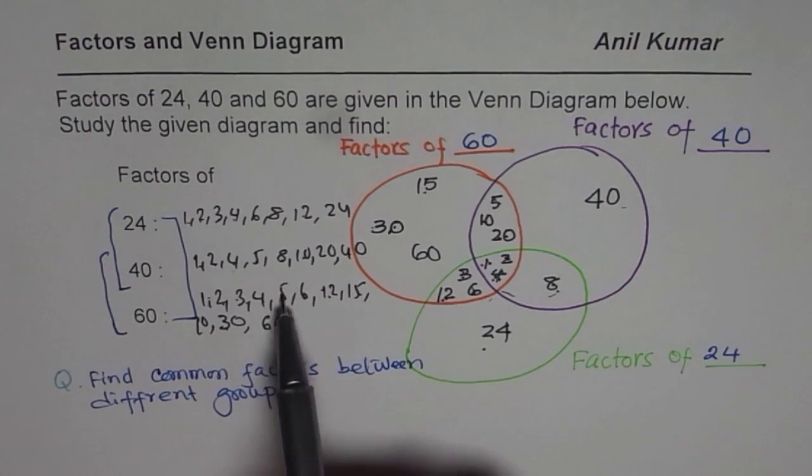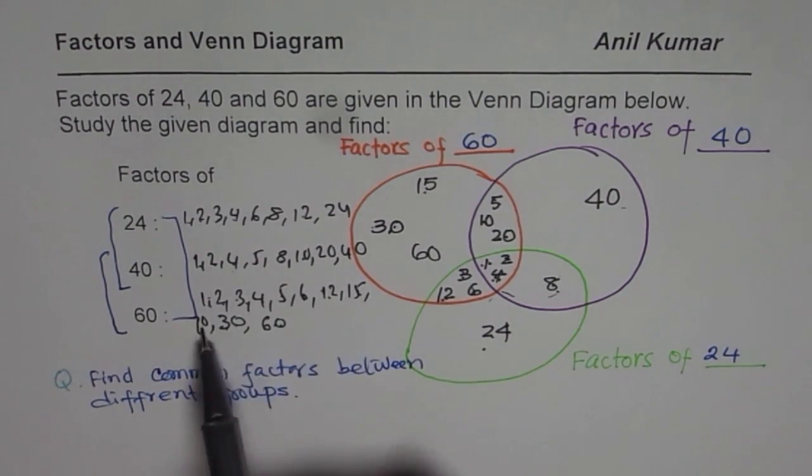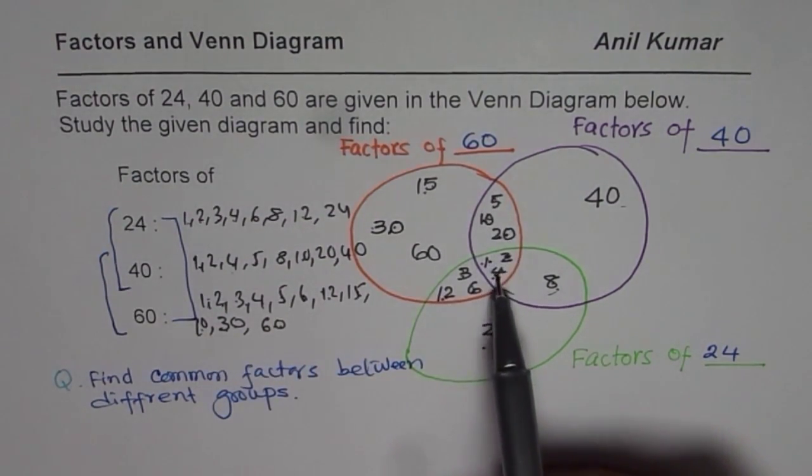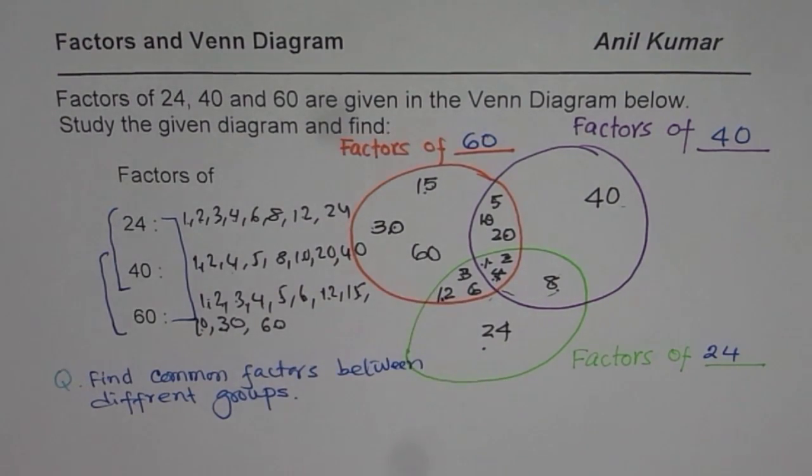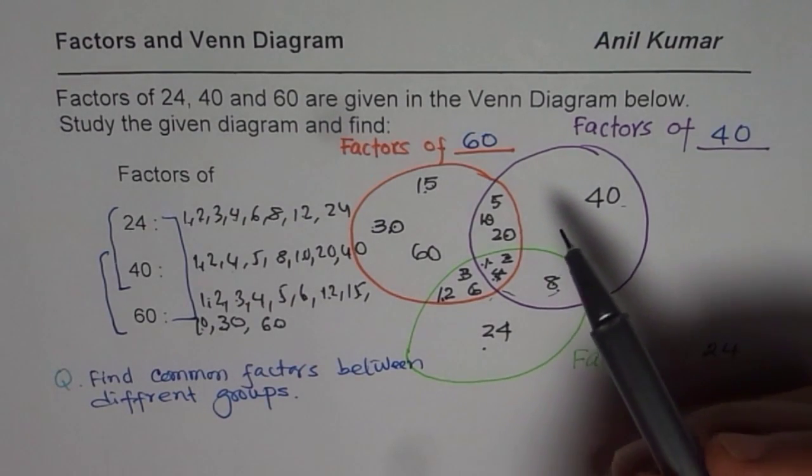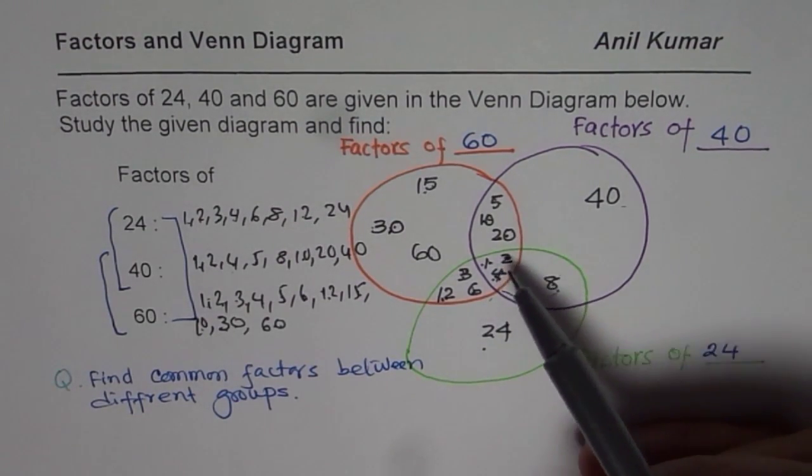Let us count them again. 1, 2, 3, 4, 5, 6, 7, 8, 9, 10, 11, 12. So, we have missed 1 factor. It is very difficult to find which one did we miss. Let us go through it once again.